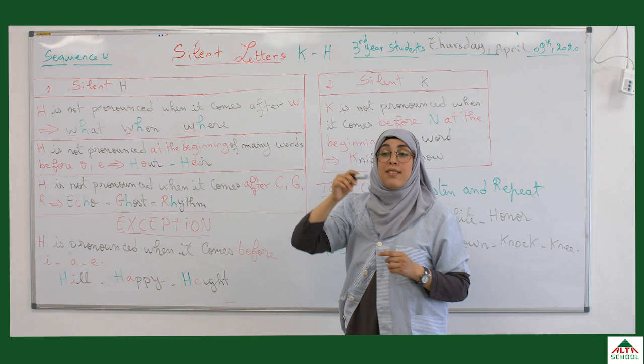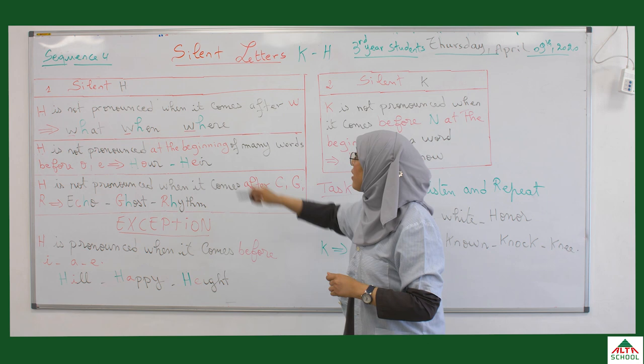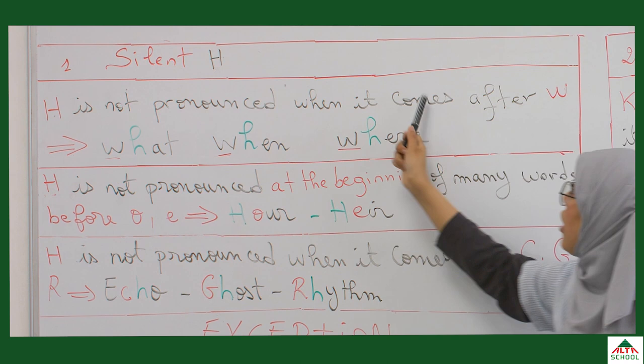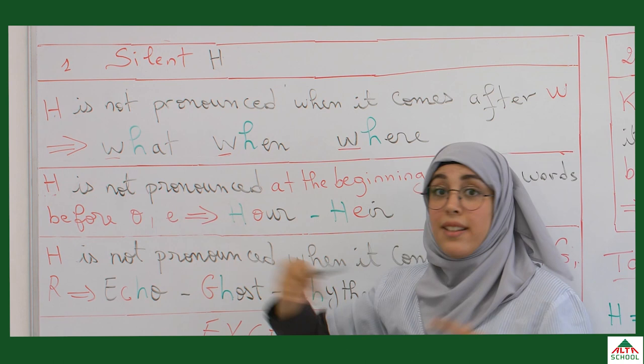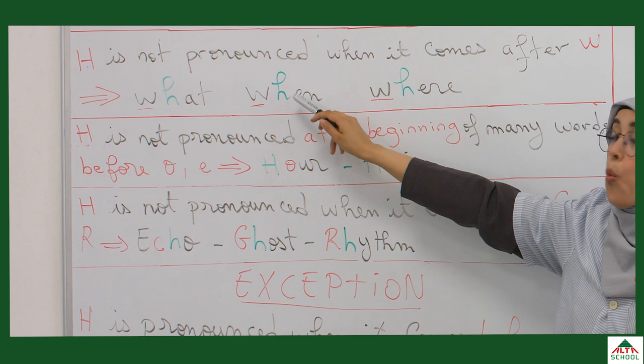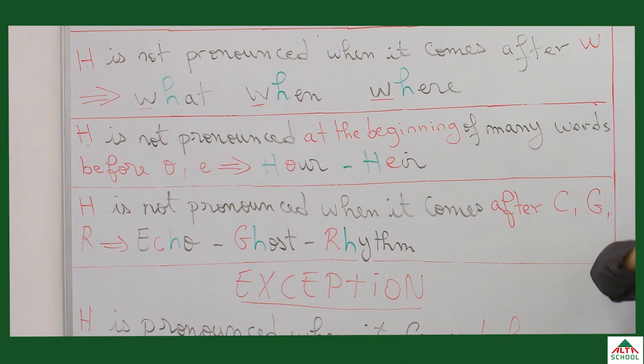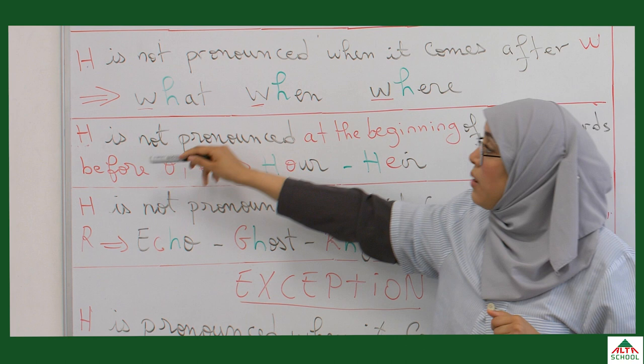So in today's lesson we have silent letters K and H. Please keep in mind that in English we have a lot of silent letters. Let's start with silent H. H is not pronounced when it comes after W. So whenever you have an H after W it's not pronounced — you say 'what', 'when', 'where'. These are WH questions, so the H is not pronounced.